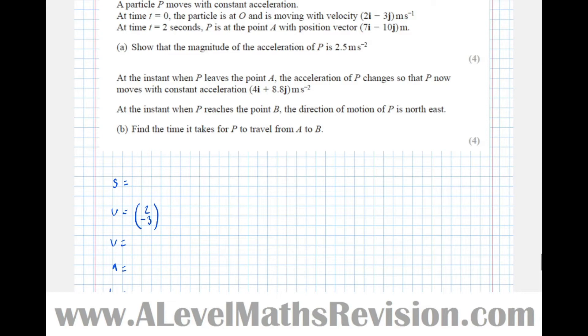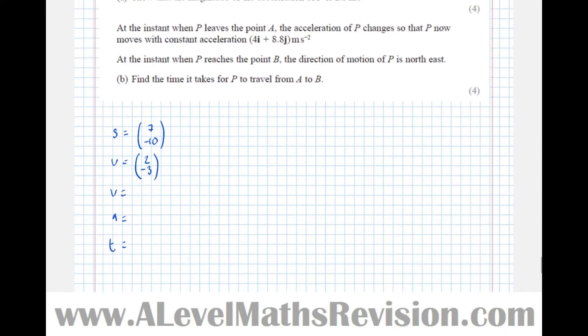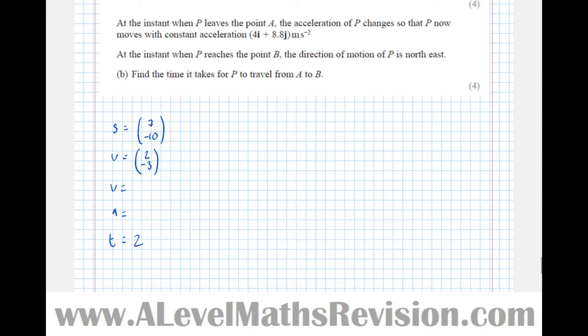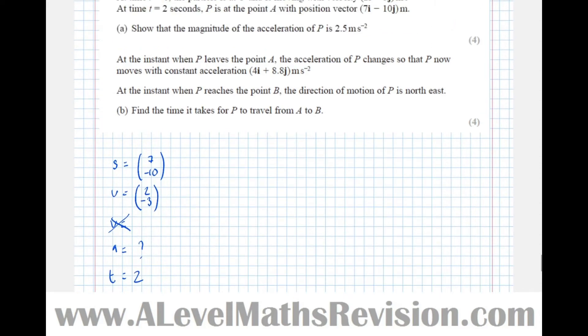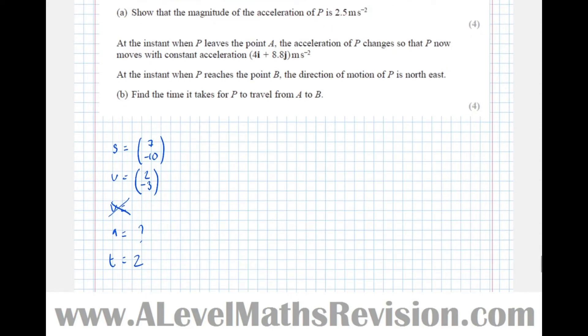At time t equals 2 seconds, P is at point A with position vector 7 minus 10, and we know that t equals 2 when that happens. It's acceleration that we need to find, so velocities are relevant. I know we need to find acceleration because the question asks, show that the magnitude of the acceleration is 2.5 metres per second squared.